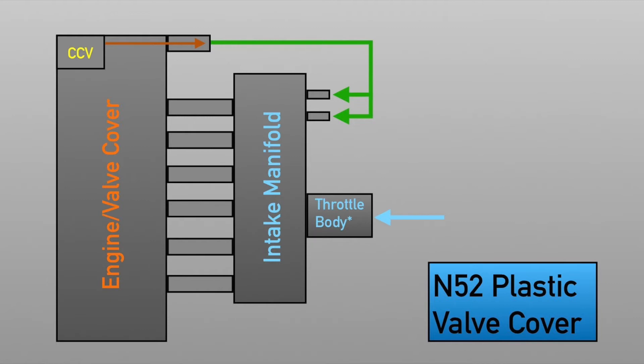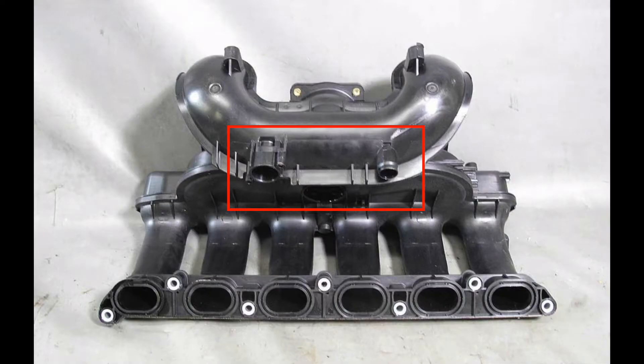The CCV system will separate the air and oil internally, and then the air will go out the port on the rear intake side of the valve cover, and it will go straight into the two inlets on the intake manifold. You can see that here in this photo, where I've circled the two inlets on the intake manifold that come from the valve cover.